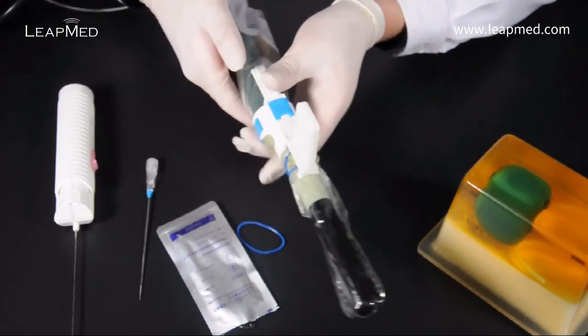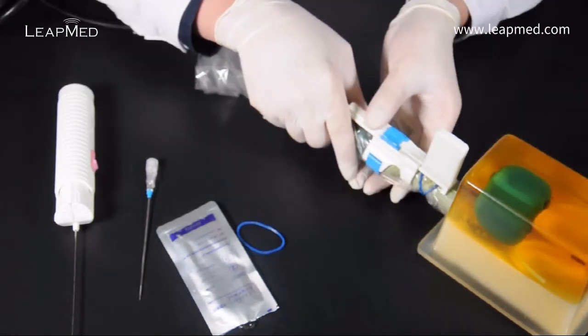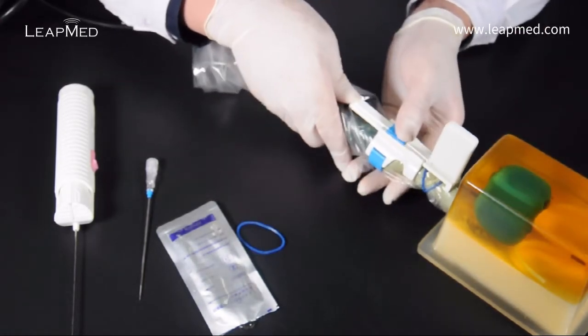Apply some gel on the top of the probe and insert the probe into the rectum slowly. When you find the right position push the needle guide forward and lock.